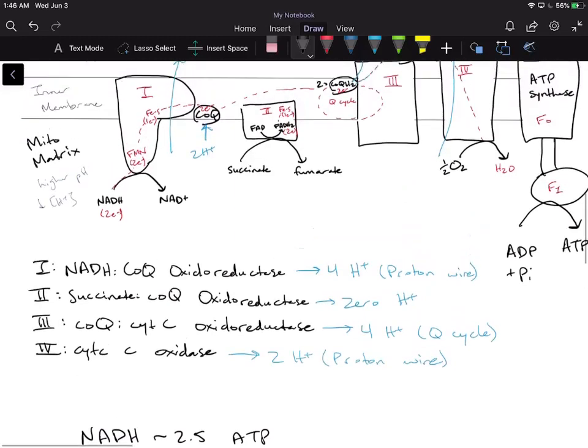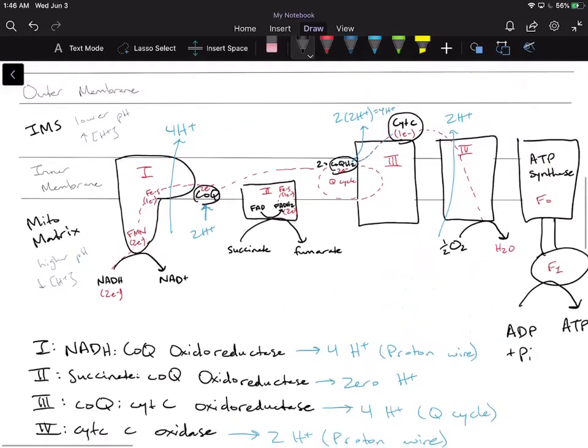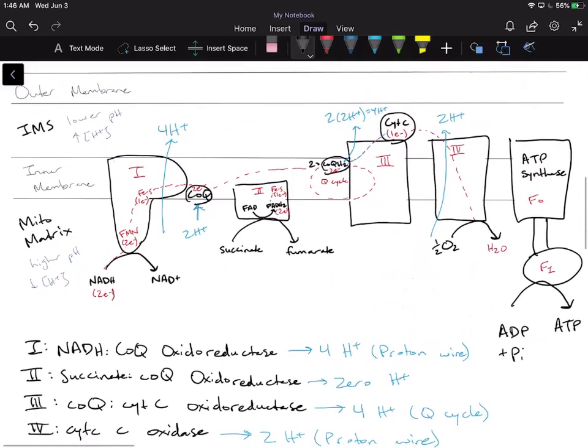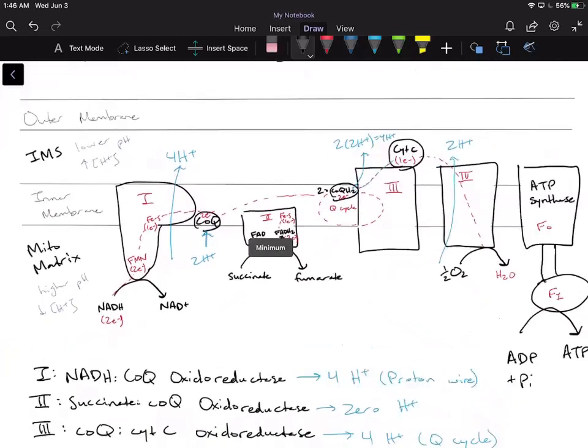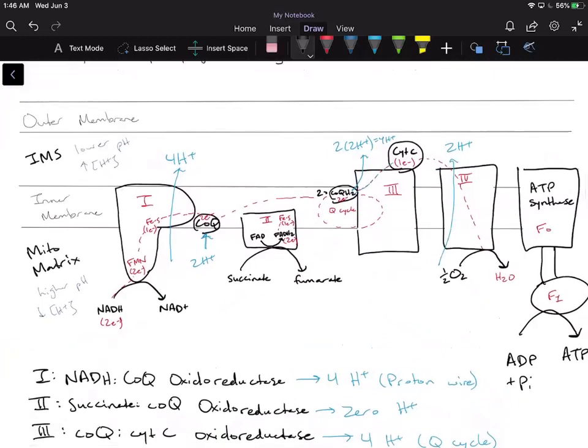So I want you to look at the electron transport chain and look at where NADH is and where FADH2 is. I know you can't really see FADH2, it's kind of scribbled in there on complex 2, but I want you to think about it. How many protons are we going to be pumping into the IMS from NADH versus how many from complex 2 or from FADH2?